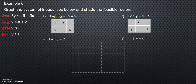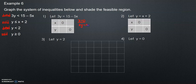For the first inequality, I let 3y equal to 15 minus 5x, changing the inequality sign to equals. When x equals zero: 3y equals 15 minus 5 times 0, so 3y equals 15, and y equals 5. So here is 5.